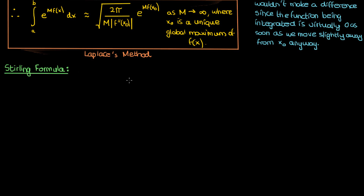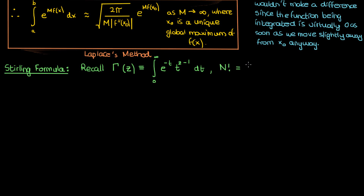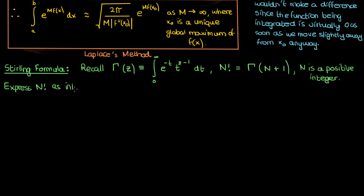To do that, we'll start with the definition of the gamma function. If you recall my video on the gamma function — link in the description — then the gamma function Γ(z) is defined as the integral from 0 to infinity of the exponential of negative t times t to the power z minus 1, dt. You may also recall that the factorial of a positive integer n can be written as Γ(n+1). This means we can actually express n factorial as an integral using the gamma function definition, giving us that N factorial is the integral from 0 to infinity of the exponential of negative t times t to the power capital N.